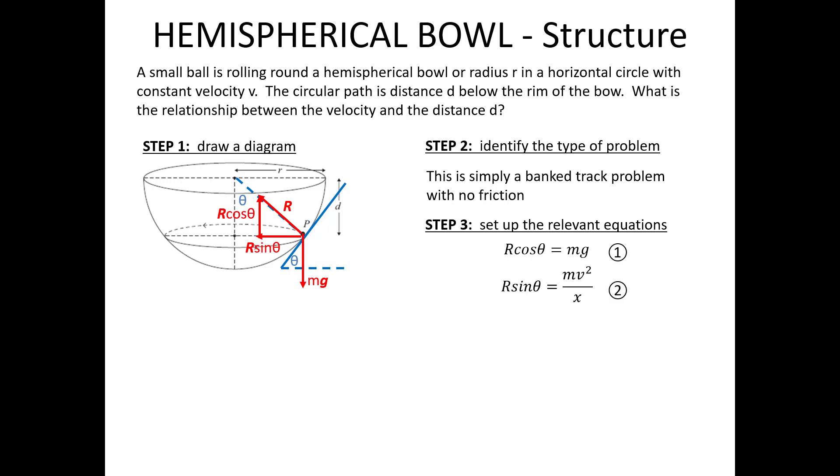These are our equations one and two. Now some of you might be looking at that second equation and thinking, mv squared over x? Surely it should be mv squared over r. No, because that denominator refers to the radius of the circular path. And I've already used the letter r to represent the radius of the bowl. So I have to use a different letter variable to designate the radius of the path.